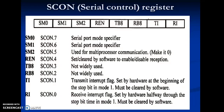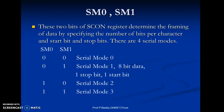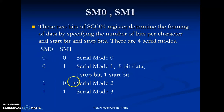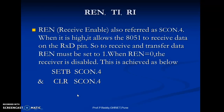SM0 and SM1 are the D7 and D6 bits of the SCON register respectively. These two bits determine the framing of data by specifying the number of bits per character and the start and stop bits. There are four serial modes: 00 is serial mode 0; 01 is serial mode 1, which is 8-bit data with one stop and one start bit — mostly used for asynchronous communication, so we prefer mode 1; 10 is serial mode 2; and 11 is serial mode 3.